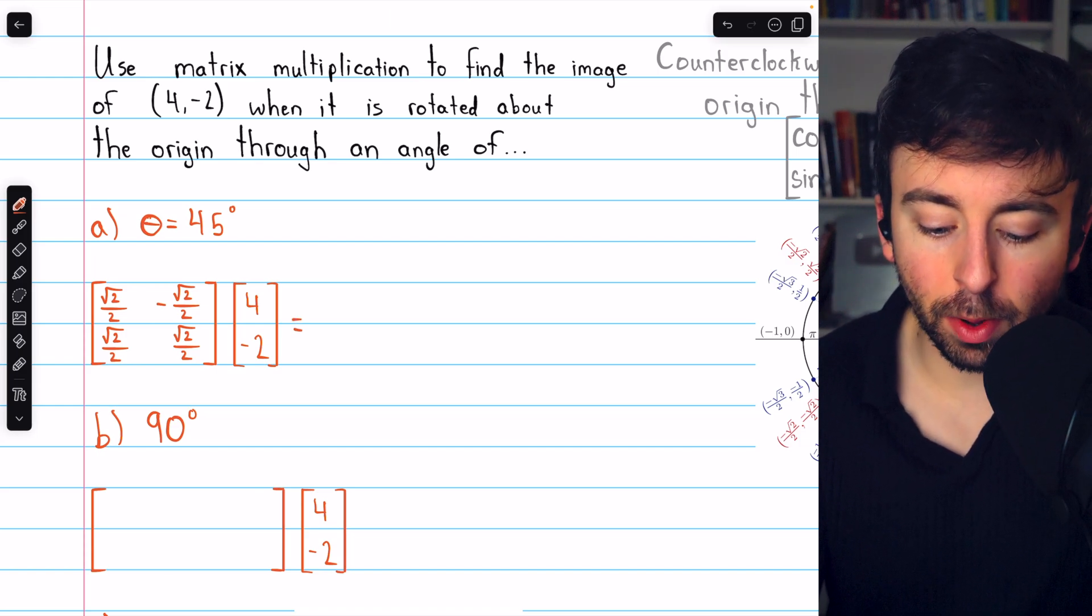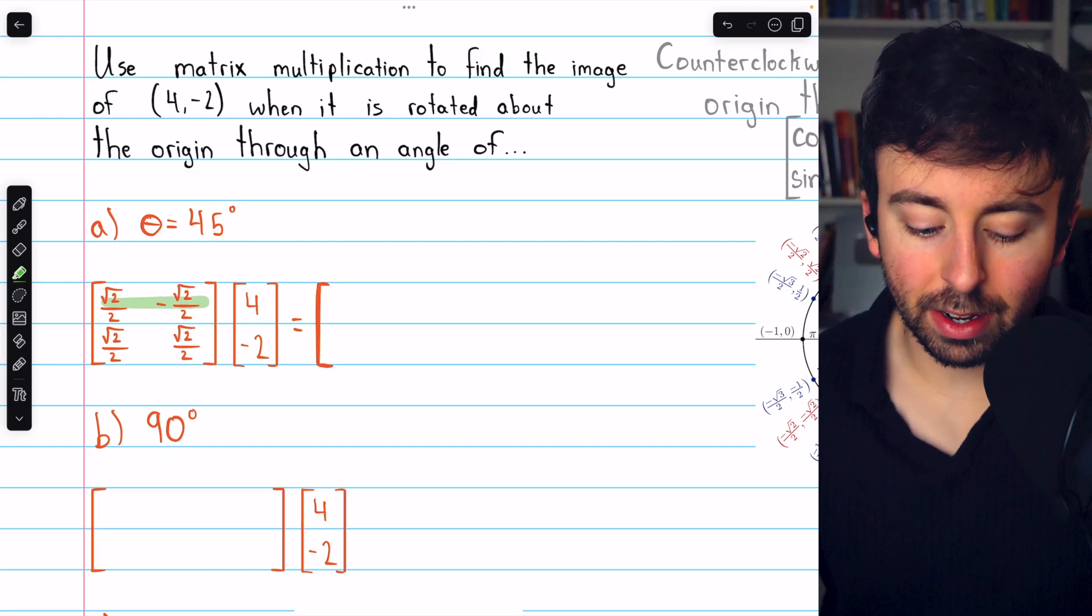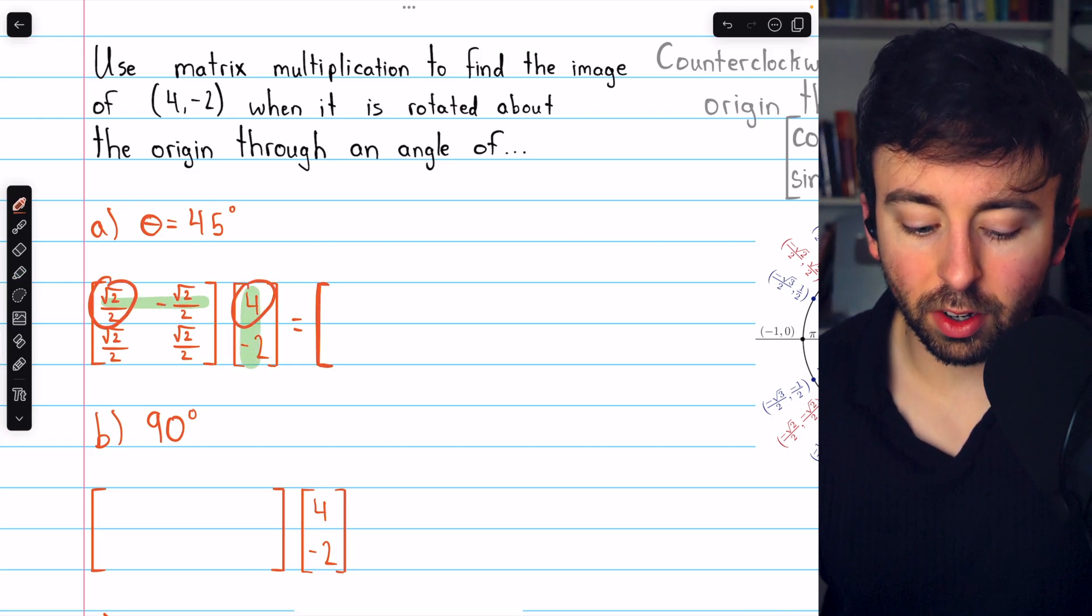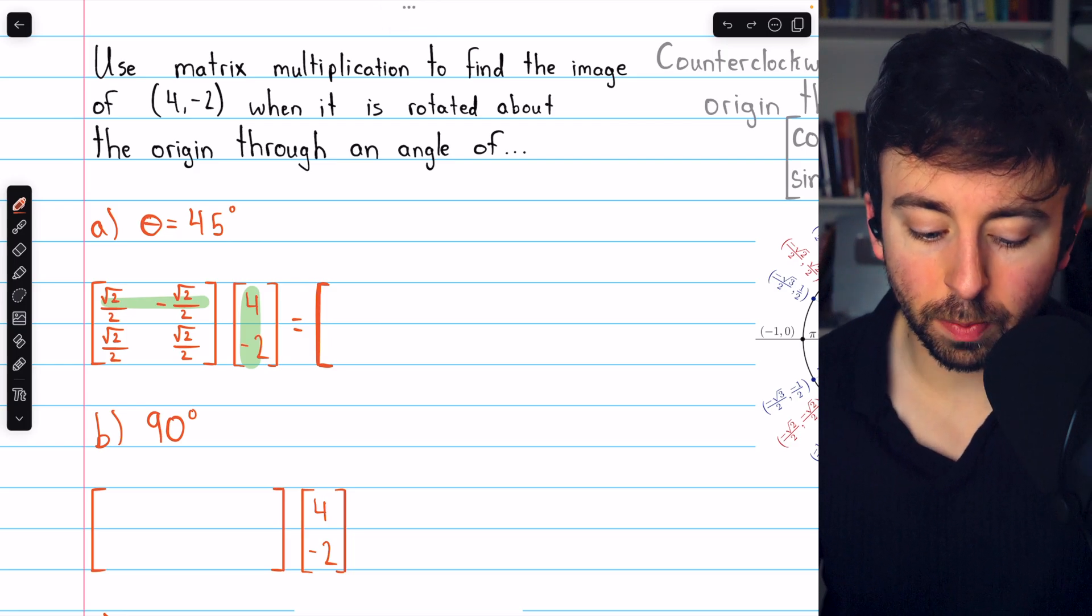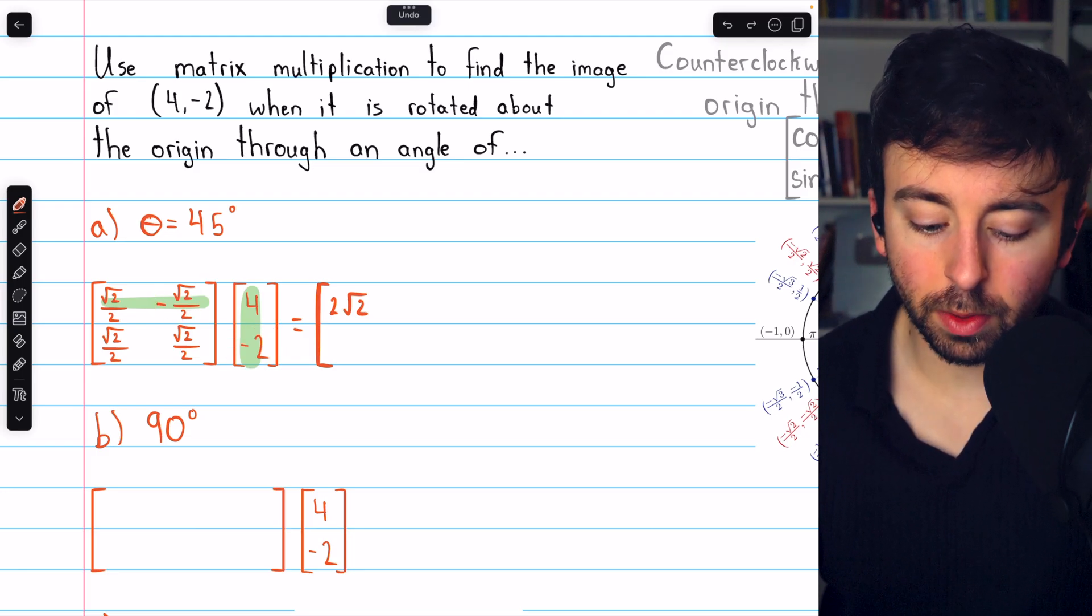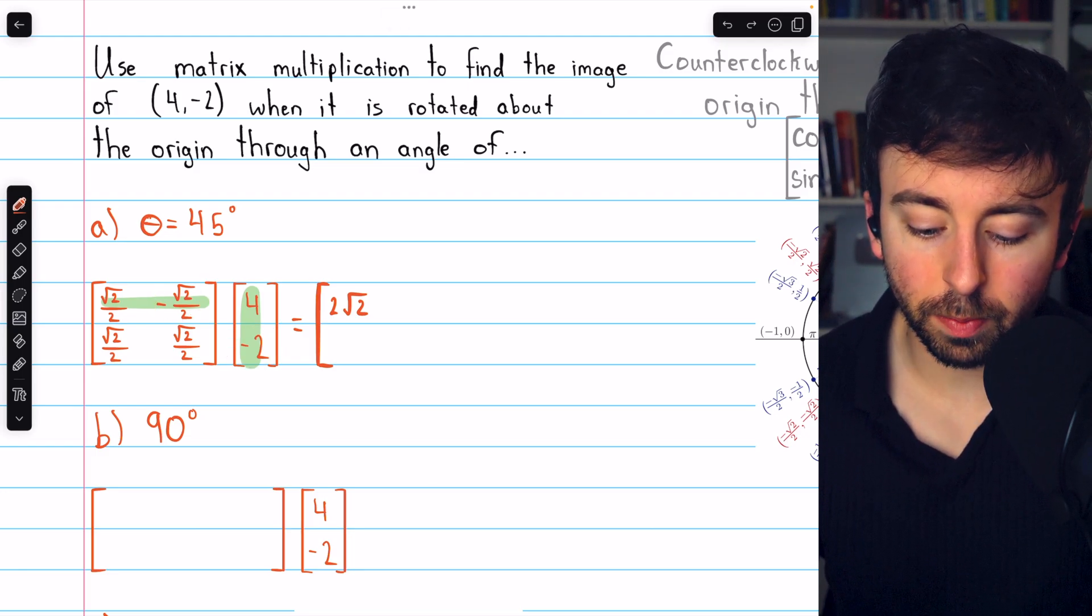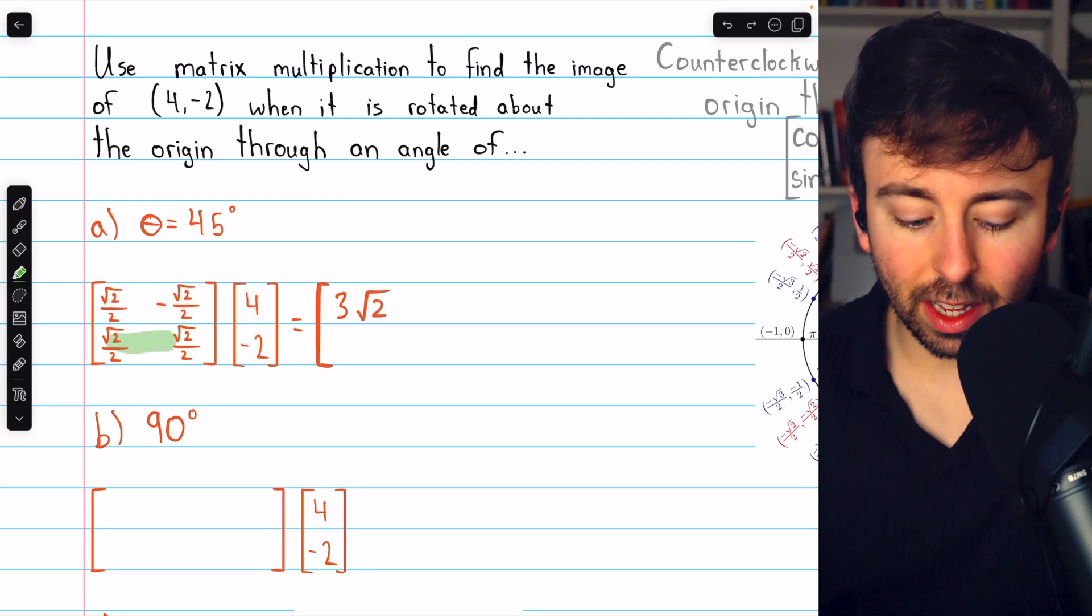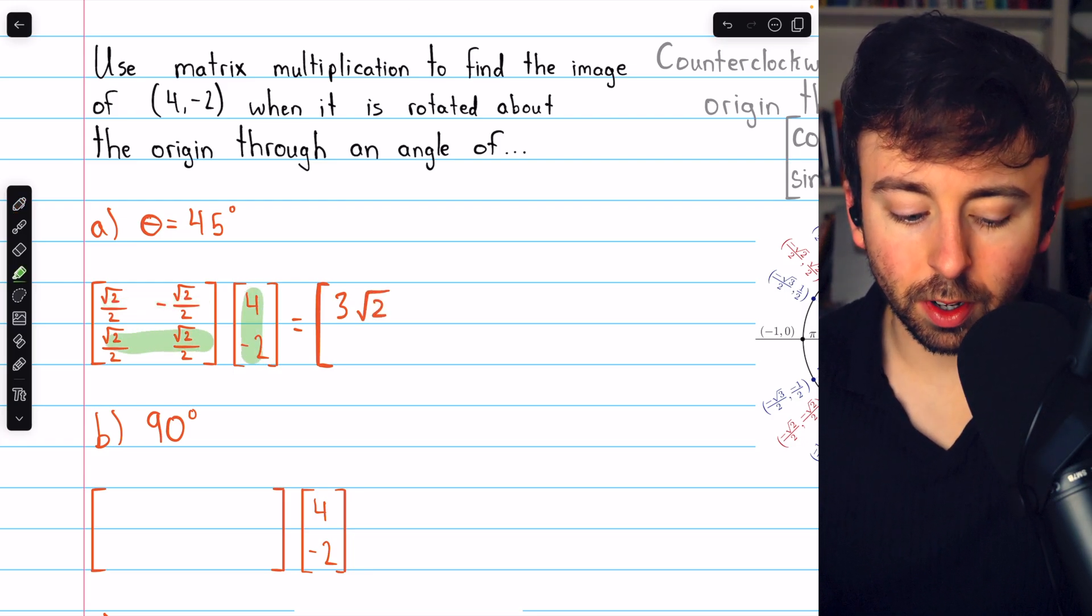Let's perform the multiplication to rotate this vector. First, we'll have this row matched up with this column. √2/2 times 4 is going to be 2√2, and then negative √2/2 times negative 2, which is positive √2, so plus √2. We can simplify this right away to 3√2.